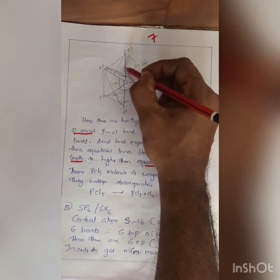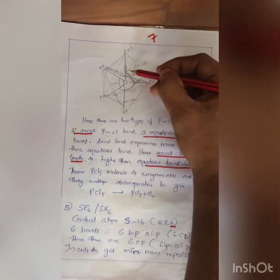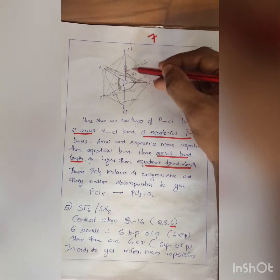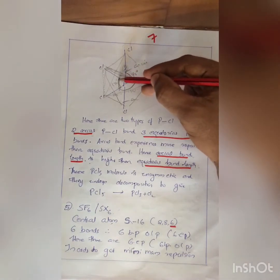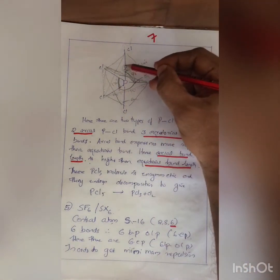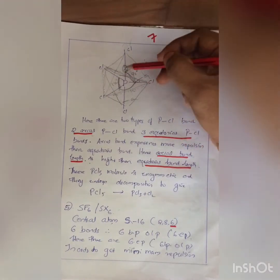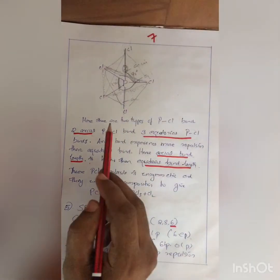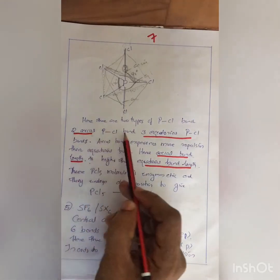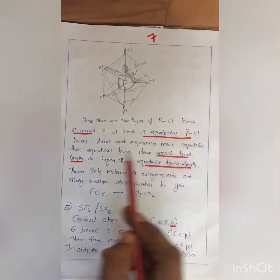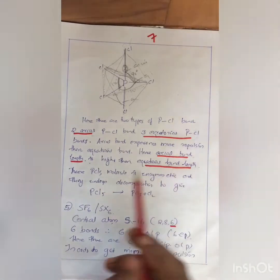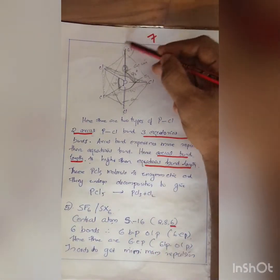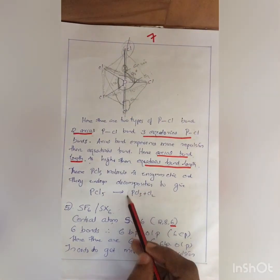In the axial bonds, repulsion occurs at 90 degrees, whereas repulsion between equatorial bonds is at 120 degrees. Since 90-degree repulsion is greater, axial bonds experience more repulsion, causing the electrons to move away from the phosphorus atom — so axial bond length is greater than equatorial bond length. Therefore PCl5 is asymmetric and undergoes decomposition to give PCl3 and Cl2, because the axial atoms can be removed.